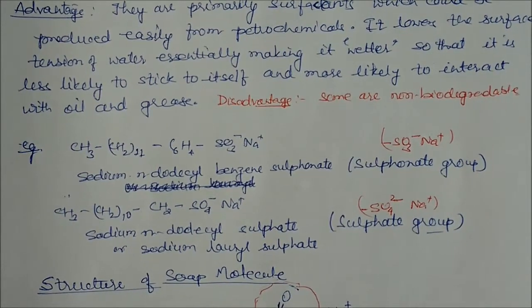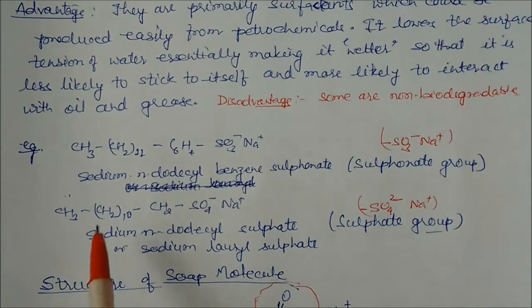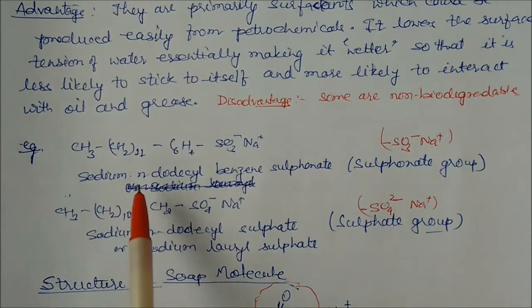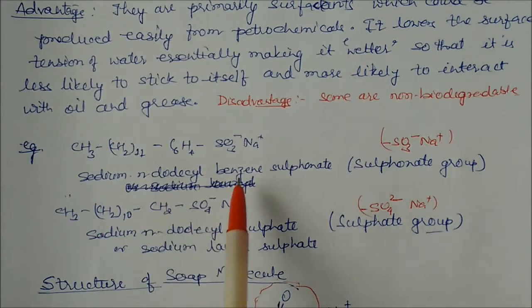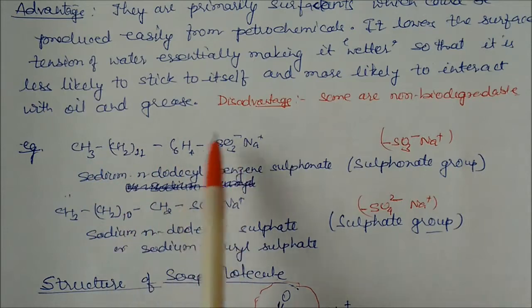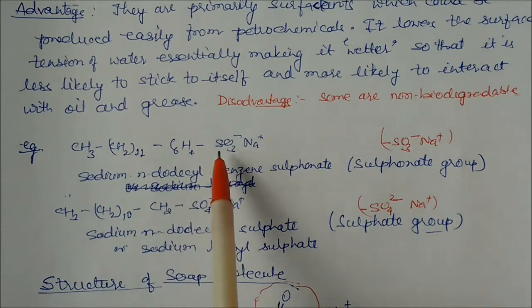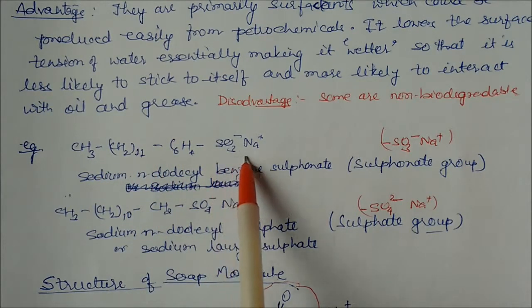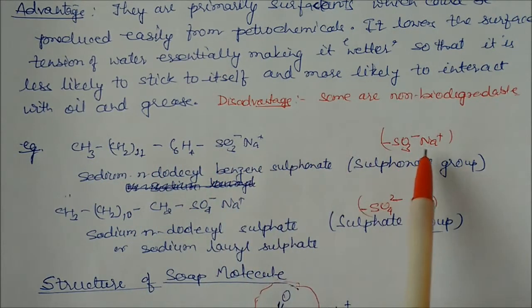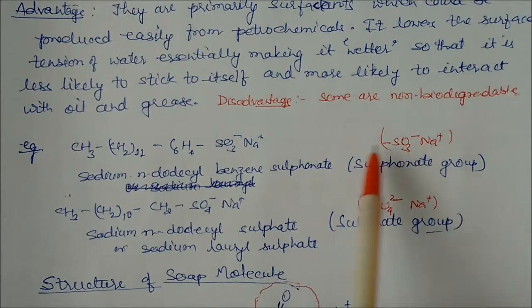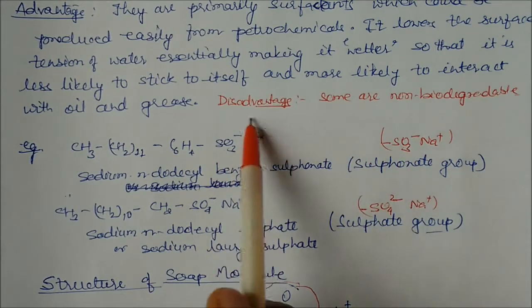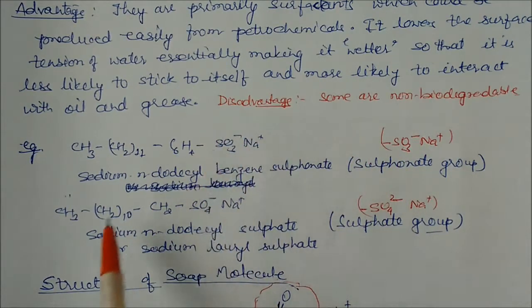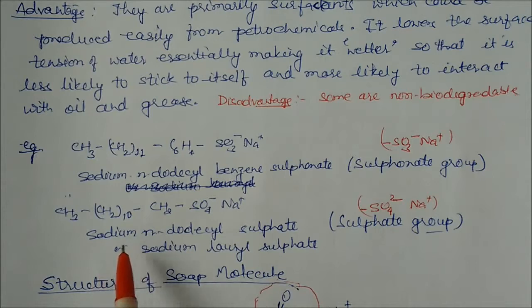Examples of detergents include sodium dodecyl benzene sulfate, which is a long molecule. The functional group in it is called sulfate or sulfonate — you can see it here. The next example is sodium dodecyl sulfate, which contains a sulfate group.